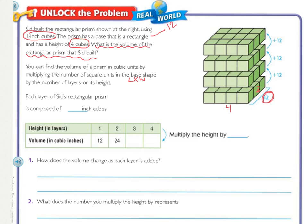And now the third dimension is the height. So if this bottom layer's area is 12, if we add just one more layer, it's the exact same length and width, so it's 12 as well, and this third layer is going to be 12, and this fourth layer is going to be 12. So each layer of Sid's rectangular prism is composed of 12 inch cubes.